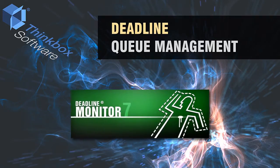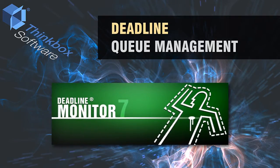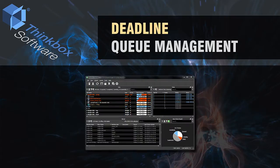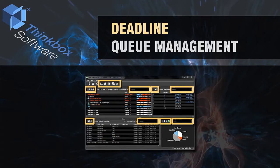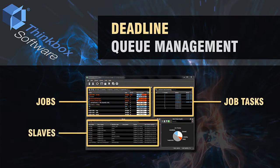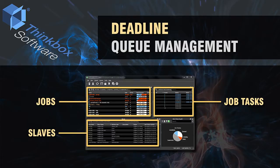The overall state of the queue is managed through a program called Deadline Monitor. Monitor provides a rich graphical interface for viewing and controlling many aspects of the Deadline system. It includes extensive customization and filtering options to tailor the UI to individual users and administrators. Through Deadline Monitor, users are able to see and manage jobs, job tasks, and the status of slaves. The monitor also features graphs to allow users to visualize many aspects of the queue.